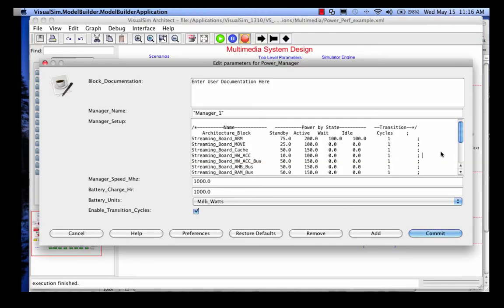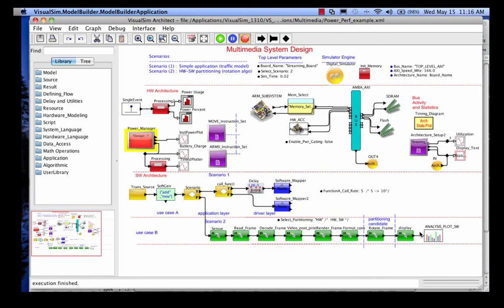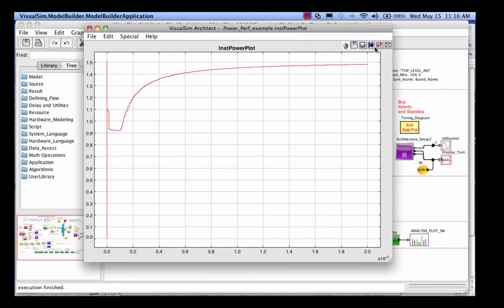That information is then plugged into the Power Manager, and we would then run the simulation. The output of the simulation, in terms of power, is a measurement of power consumed as the simulation progresses. And you can see here that the beginning number in the dynamic simulation is very close to the 1.19 watts per second given in the spreadsheet with its static functions.